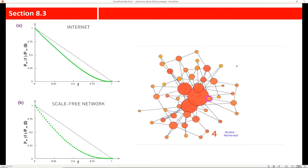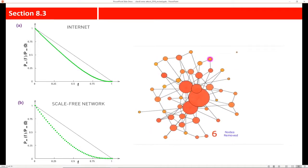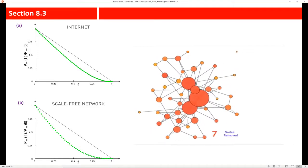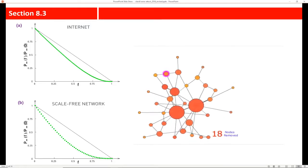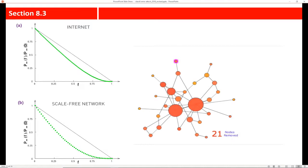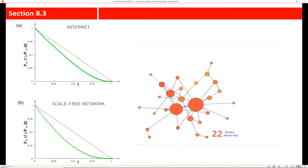And we can see that happening here. So we're not going after hubs or anything like that. We're just randomly removing nodes from the network. And you can see that as this process moves along, that we have to actually remove quite a few nodes in order to have this breakdown.